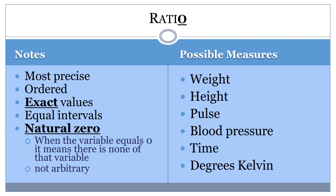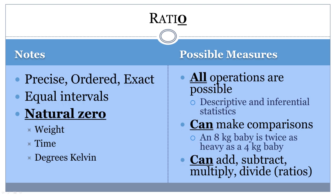Typically, this level of measurement is only possible with physical measurements like height, weight, and length. Any statistical tests can be used with ratio-level data, as long as it fits with the study question and design. It is possible to compare amounts of the variable and make a claim that one is twice as much as the other.